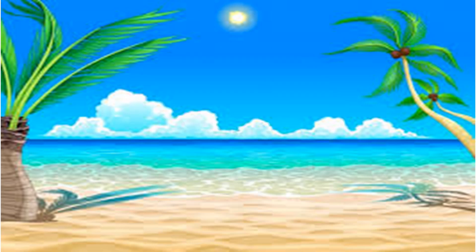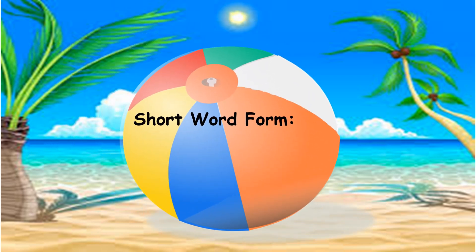The final way of writing numbers is in short word form. When we write in this form, we simply write the number followed by the period it represents. So, you will notice I wrote 2 million 587 thousand 256. Whenever you write in short word form, you do not have to include the words units or ones.